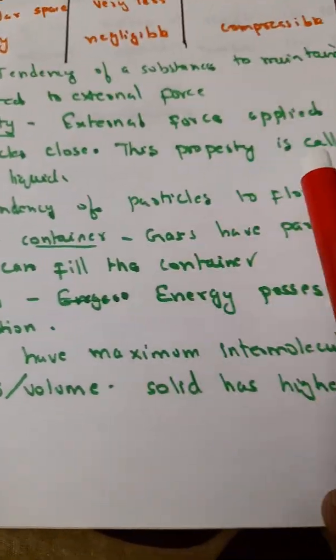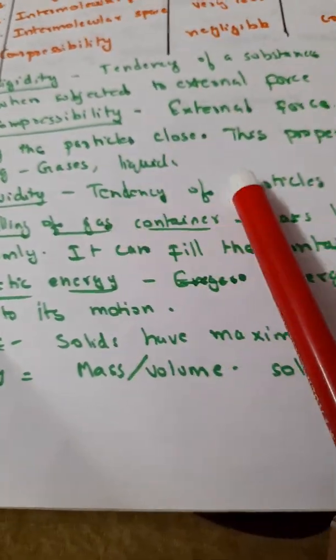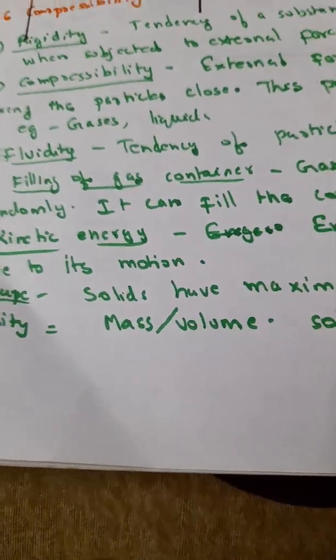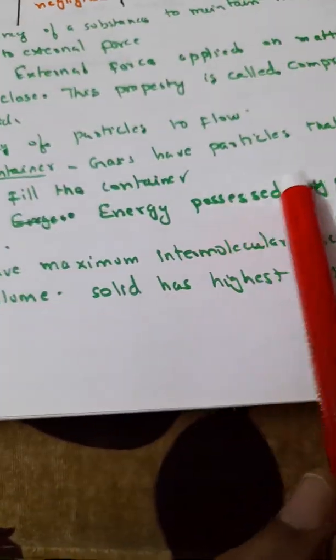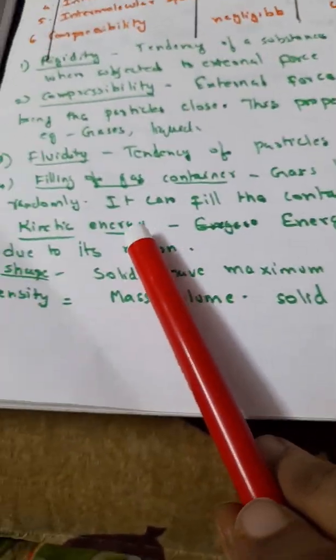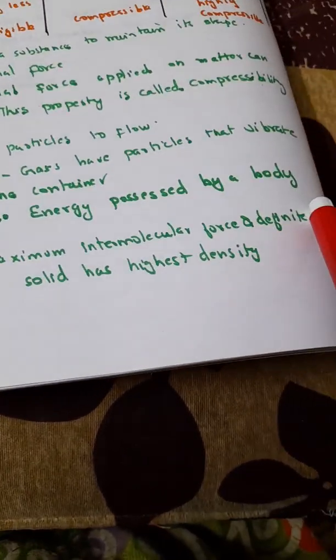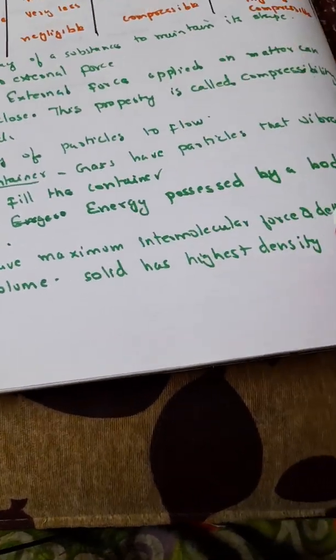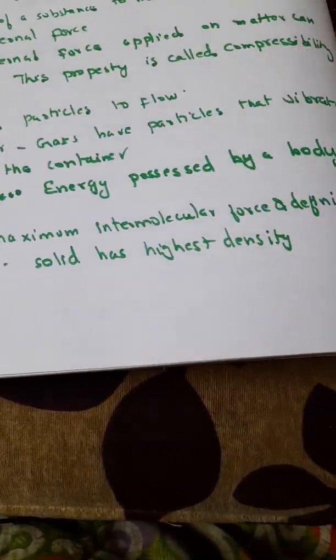What is compressibility? Compressibility is external force applied on matter can bring the particles close. When you apply force on a substance, it can bring the particles close together. This property is known as compressibility. Fluids means tendency of particles to flow. Then filling of gas container: gases are particles that vibrate randomly, that is why it can fill the container. And kinetic energy is energy possessed by a body due to its motion. Shape: solids have maximum intermolecular force and definite shape. And density equals mass by volume. Solid has the highest density.